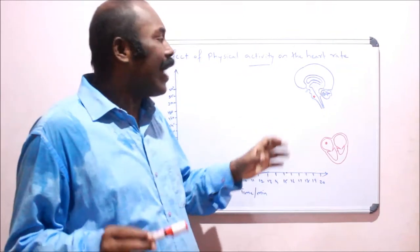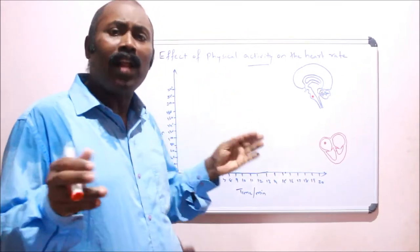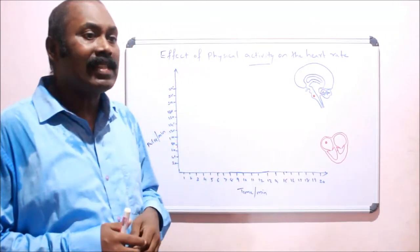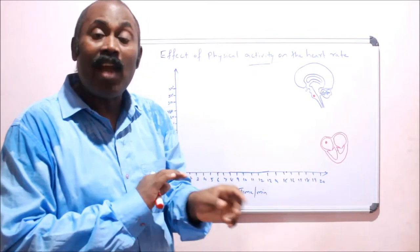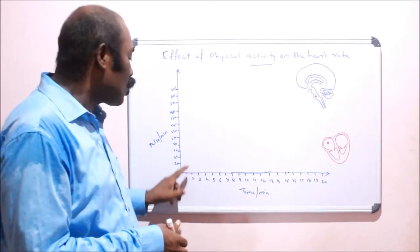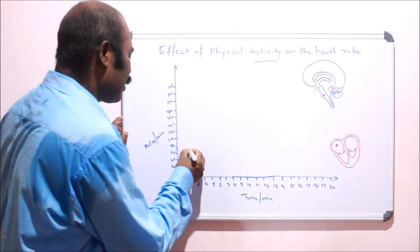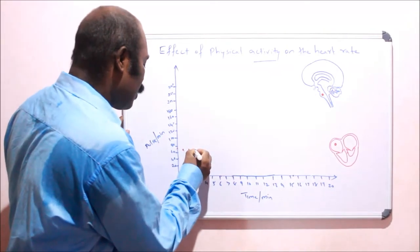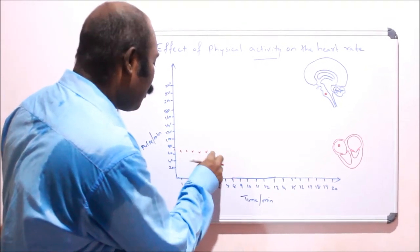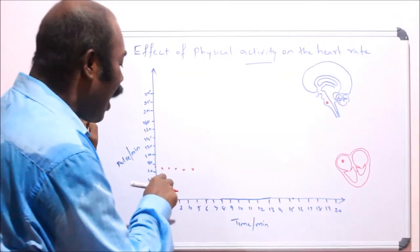Now we are going to see a simple investigation to show how physical activity affects the heart rate. You can do this at home or in a group. In this activity, you check your pulse every minute for five minutes. In the first minute you take the pulse rate and get around 70 to 72. You repeat this for each of the five minutes and you will get the heartbeat at the same rate throughout.